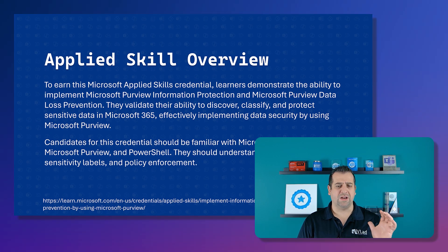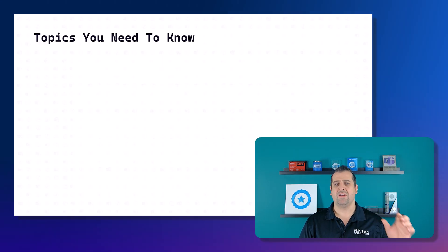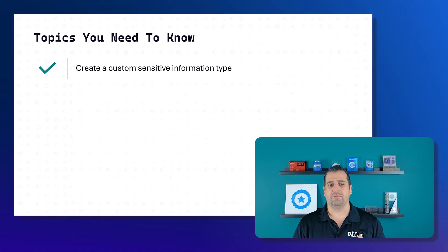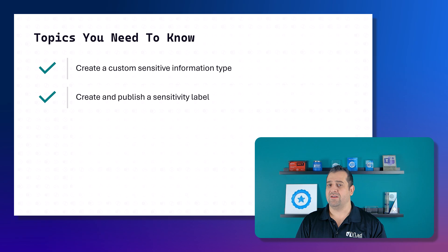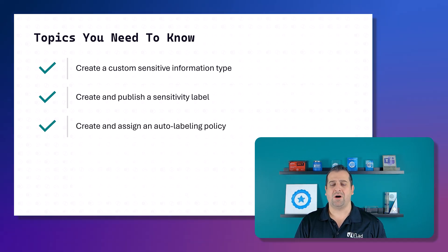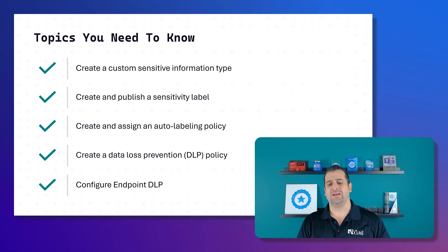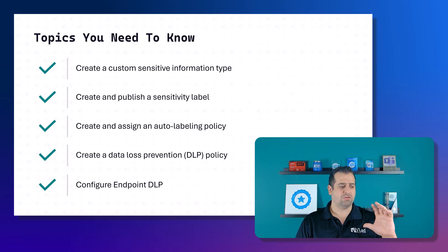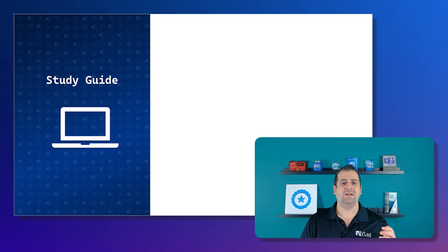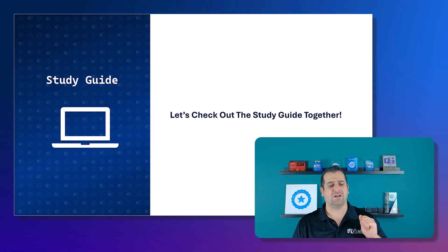Microsoft also gives us a specific list of topics you need to know. They are: create a custom sensitive information type, create and publish a sensitivity label, create and assign an auto labeling policy, create a data loss prevention policy, and configure endpoint data loss prevention. Those are the five high-level things you absolutely need to know, and we even have a more detailed version inside the study guide.